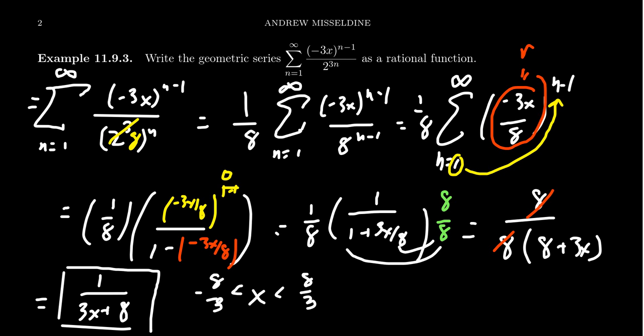between negative 8/3 and positive 8/3. Where do we get that? Well, we're just using the observation that the ratio needs to be small. That is to say, negative 3x over 8 needs to be small. And as you start solving for this inequality, you're going to get the absolute value of x is less than 8/3,